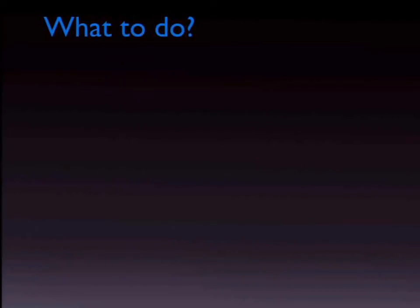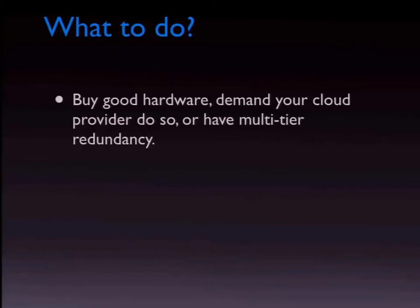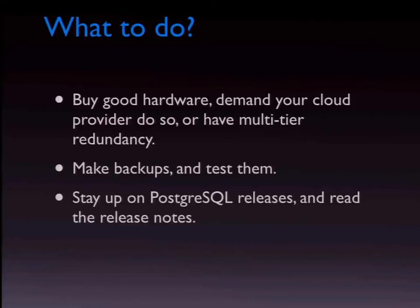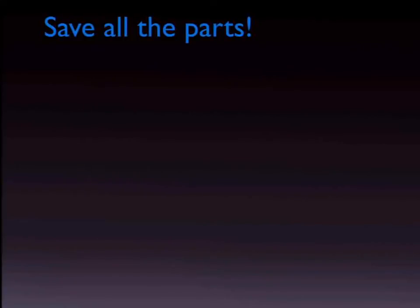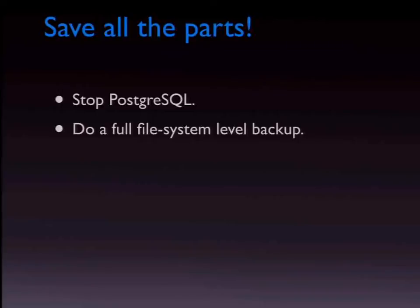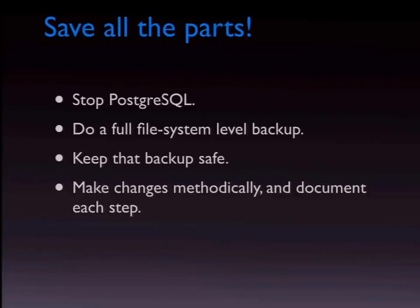So what do you do? Buy good hardware, demand your cloud provider use it, or have multi-tier redundancy — ideally all of these. Have backups and test them, and stay up on Postgres releases and read the release notes. When corruption happens, the first rule is: save all the parts. Stop Postgres, do a full file system-level backup, keep that backup safe, work on a copy, make changes methodically, and document what you did.